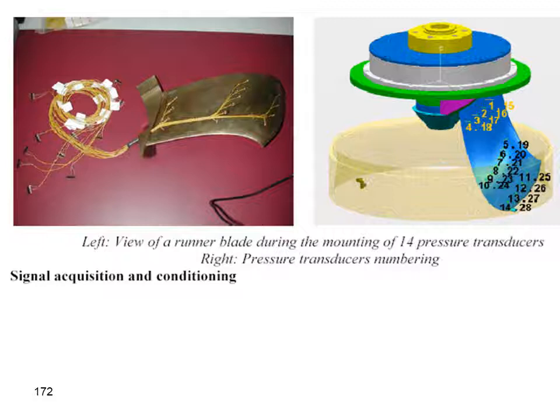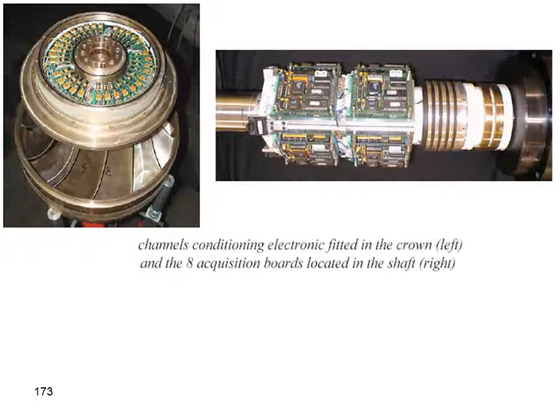To study cavitation, pressure transducers are connected via wires to the face and behind the blades to obtain pressure distribution around the blade. These measurement points are connected to a data acquisition system through electronic cells installed around the turbine model shaft.